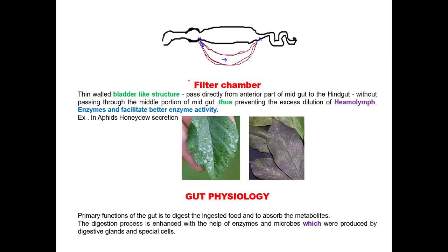The filter chamber is a thin-walled, bladder-like structure which passes directly from the anterior portion of the midgut to the posterior portion of the midgut or anterior portion of the hindgut, without passing through the middle portion of the midgut. The filter chamber prevents excess dilution of the hemolymph and enzymes, and facilitates better enzyme activity. The filter chamber is mainly present in sap-sucking insects such as aphids, leafhoppers, and plant bugs.